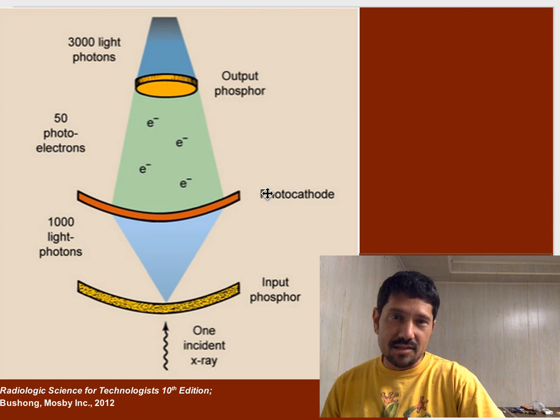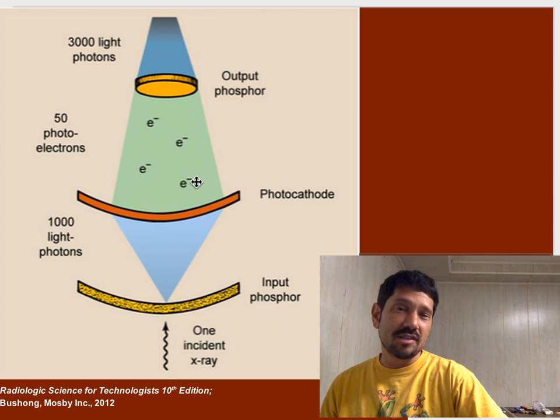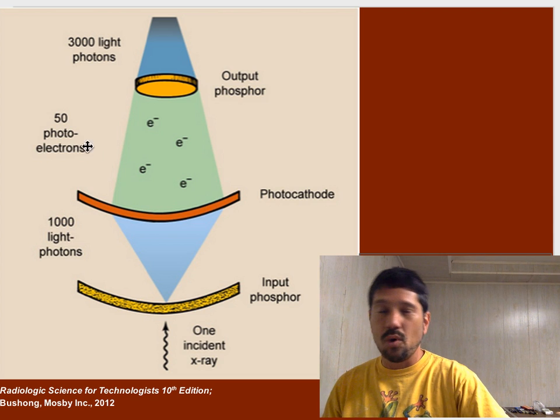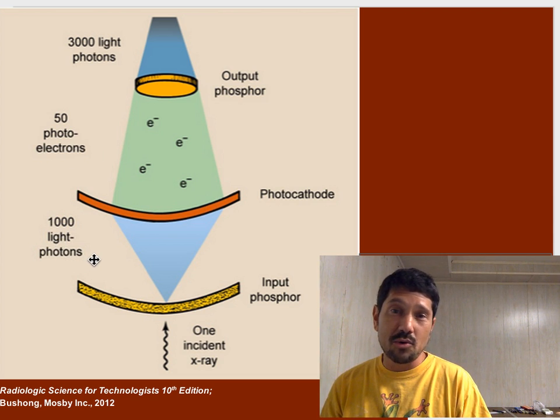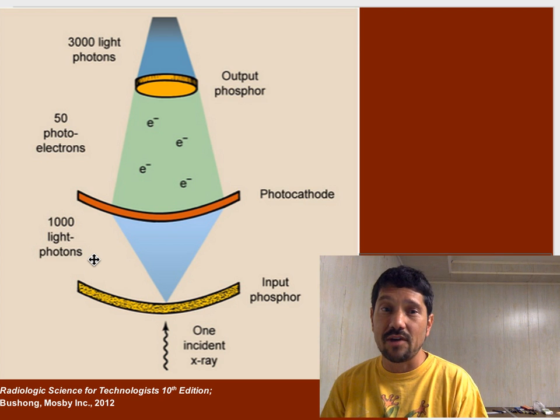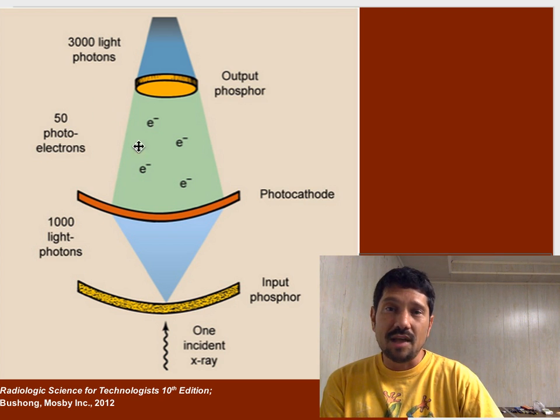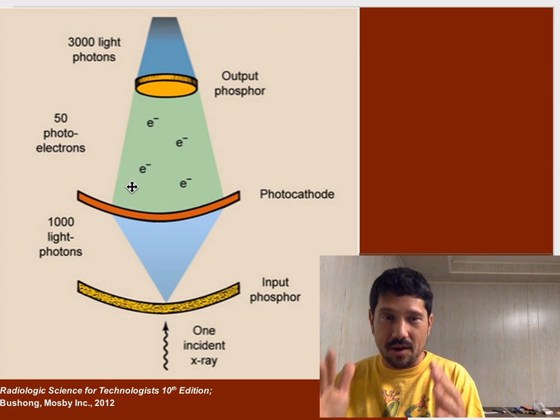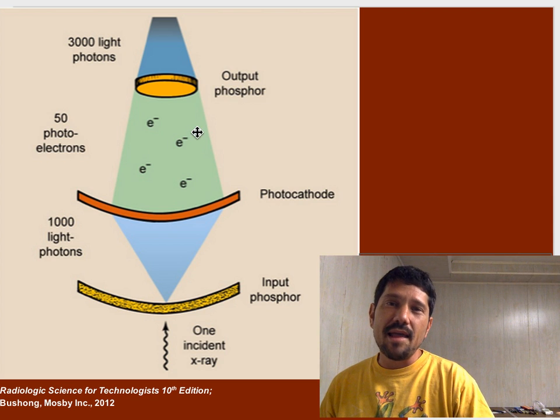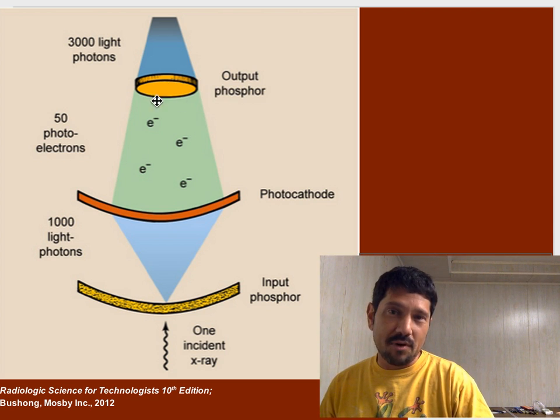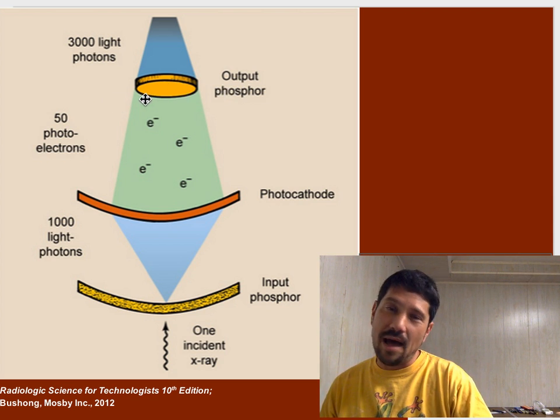That light then hits our photocathode, which it turns into electrons. And you don't get one electron for every one light photon. It takes quite a few light photons to generate each electron. Those electrons fly along and they get focused by our electrostatic lenses and they get minified. They get focused down onto a smaller output phosphor.